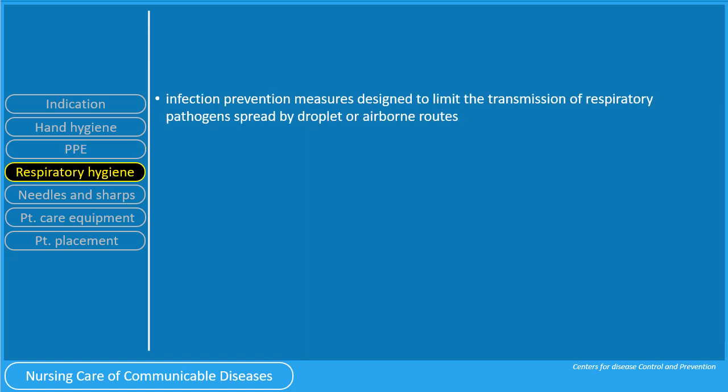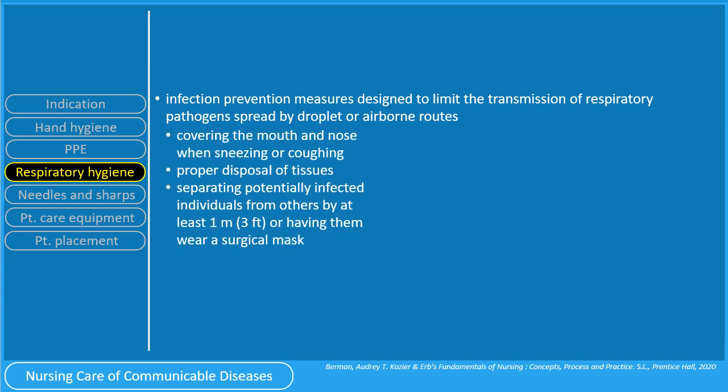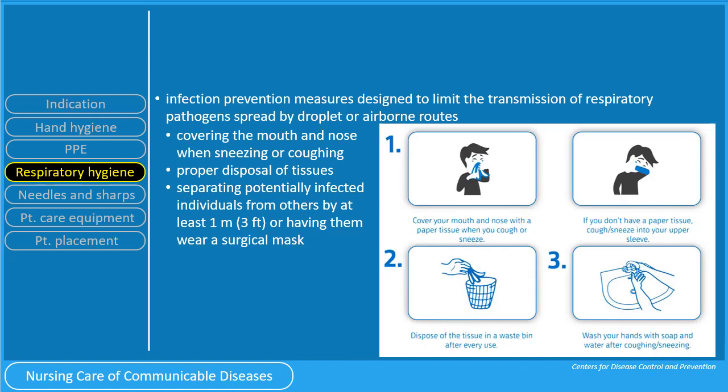Respiratory hygiene is an infection prevention measure designed to limit the transmission of respiratory pathogens spread by droplet or airborne routes. It involves covering the mouth and nose when sneezing or coughing, proper disposal of tissues, and separating potentially infected individuals from others by at least one meter or three feet, or having them wear a surgical mask. Cover your mouth and nose with a tissue when you cough or sneeze, and if you don't have a tissue, cough or sneeze into your upper sleeve.